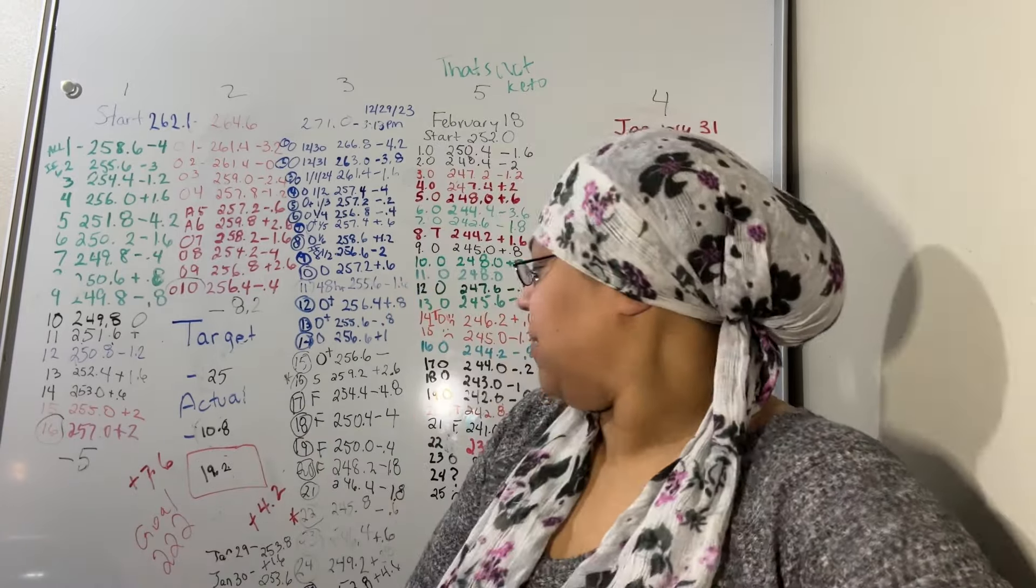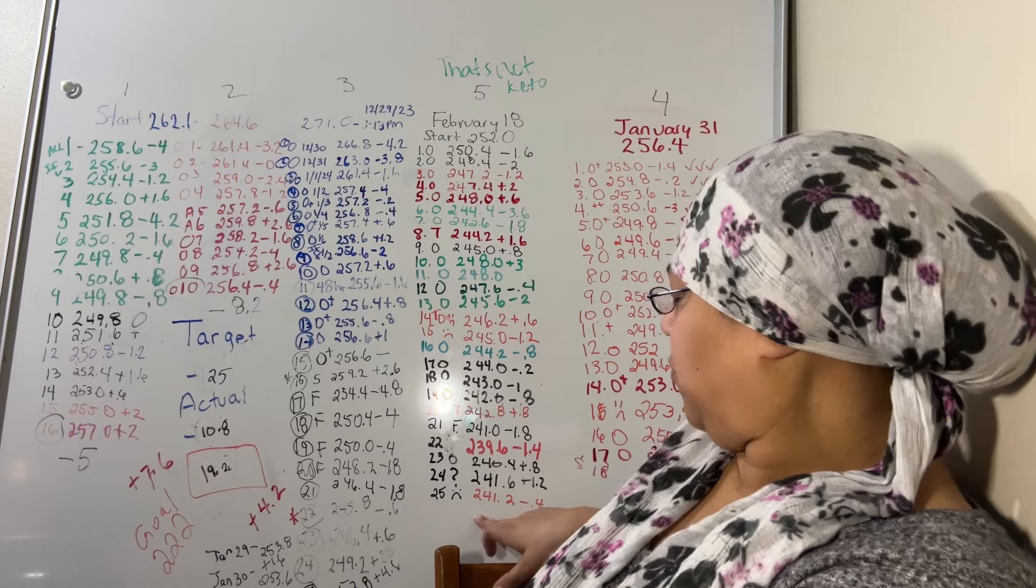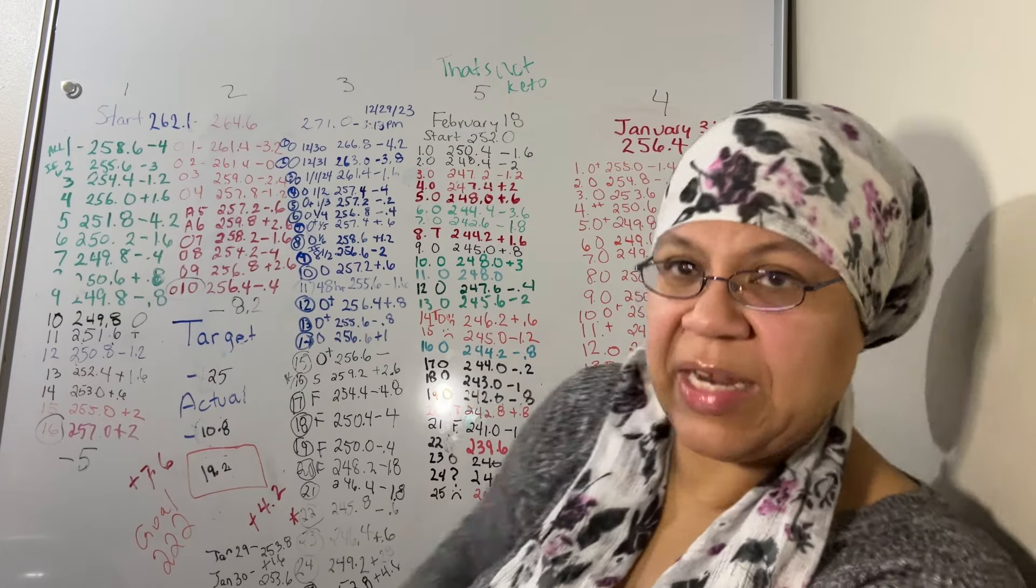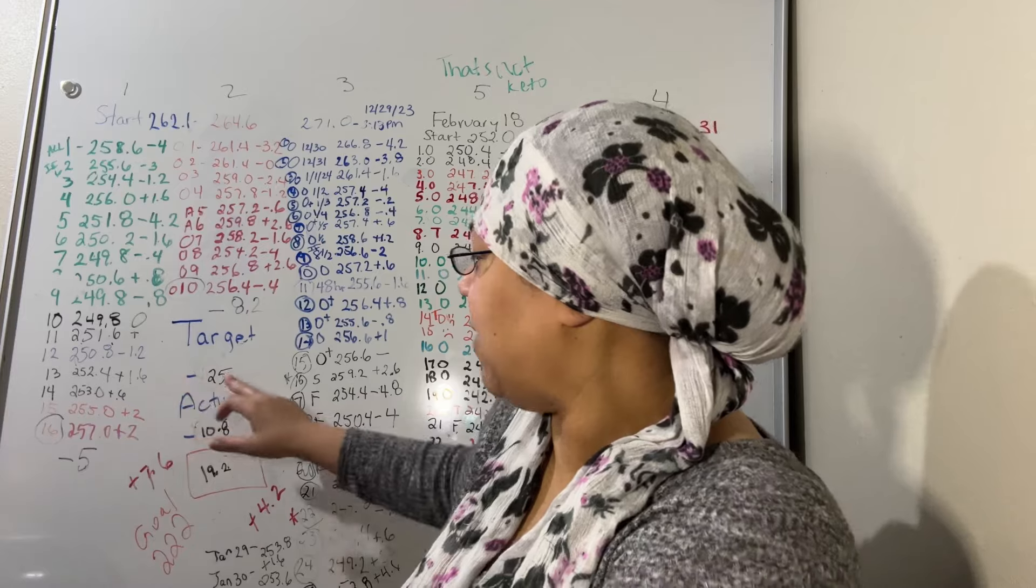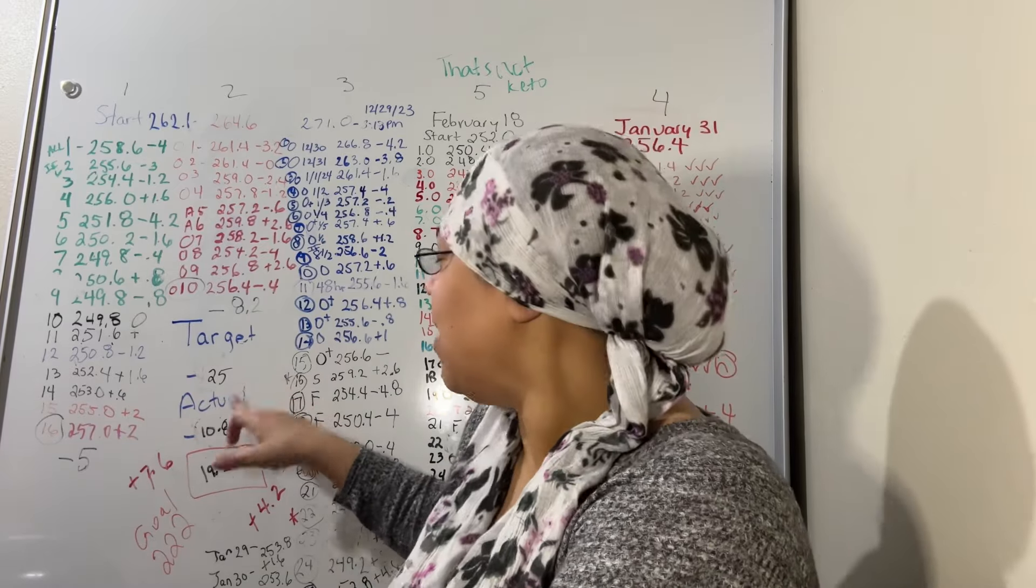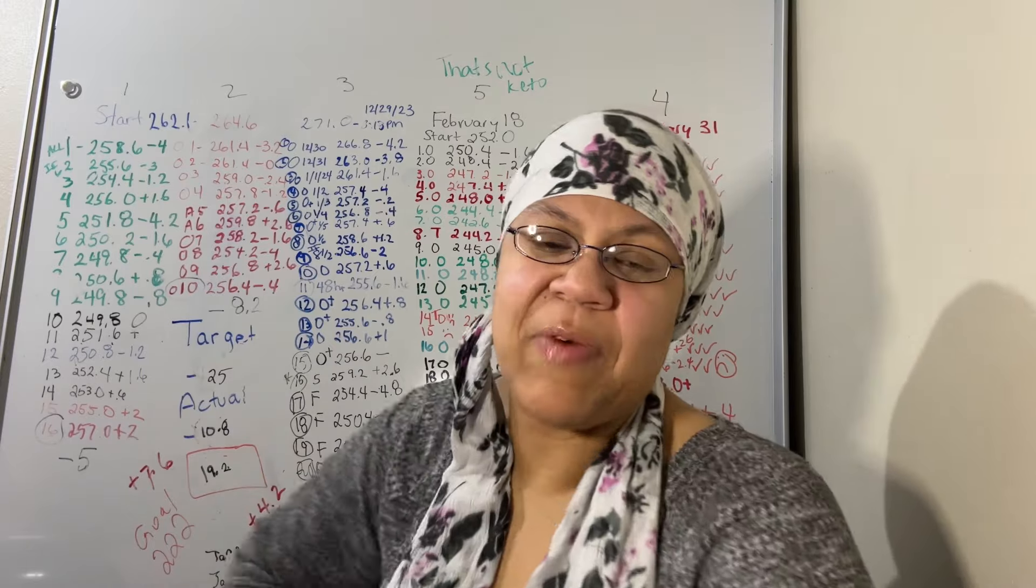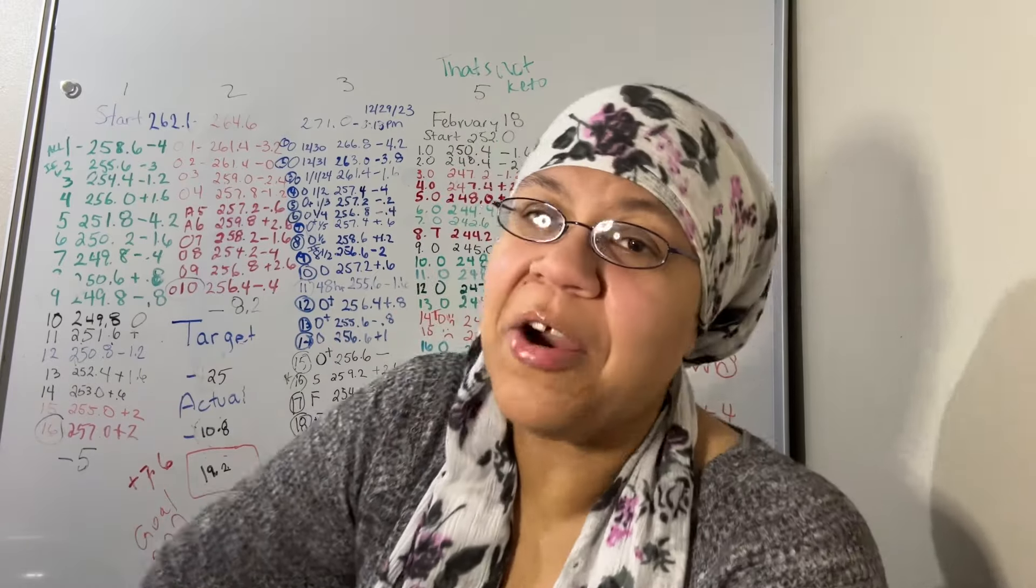My weight today is 241.2. That's minus 0.4. Sad face because I didn't do a good job. Super sad face because I need to be down 25. I'm only down 10.8. I need to lose 19.2 in five days. That's not happening. Sorry.